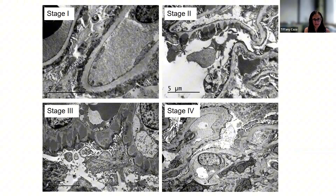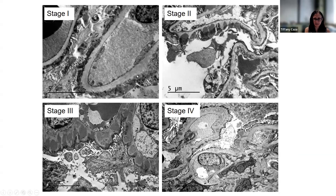There are four stages of membranous nephropathy identified ultrastructurally. In stage one, the immune deposits don't show any significant reaction to the underlying glomerular basement membrane — this is seen earlier in the disease. In stage two, you have spike formation.